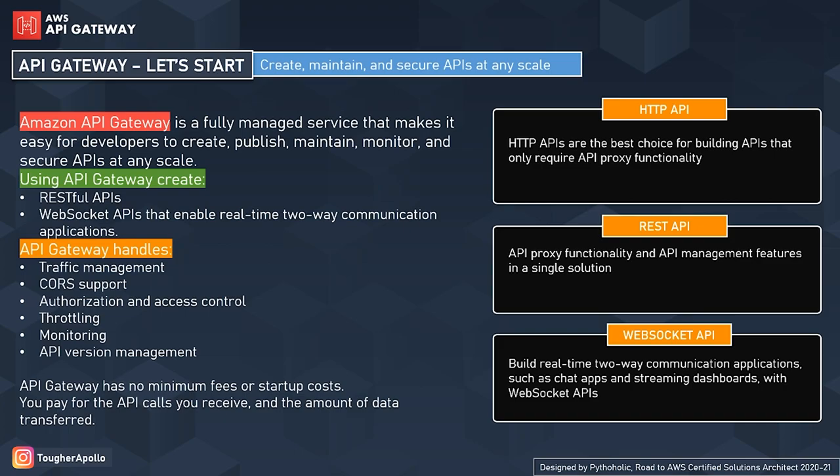API Gateway also supports containerized and serverless workloads and web applications. If you're using ECS to host your application, you can use API Gateway too. It has provisions for traffic management, cost support, authorization and access control, performance throttling, traffic monitoring, and API version management. There are no minimum fees or startup costs — you pay for the API calls you receive and the amount of data transferred. Think of API Gateway as a reverse proxy that acts as a resource provider for the client.